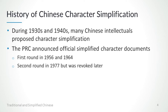The Republic issued its first round of official character simplification in two documents, the first in 1956 and the second in 1964. There was also a second round in 1977, but that was poorly received and the authorities later revoked it.